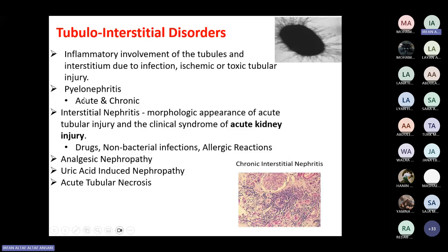This manifests in the form of either pyelonephritis — inflammation of the nephrons and the collecting system of urine — which can be acute or chronic. Another form is interstitial nephritis, whose clinical syndrome is known as acute kidney injury. Causes include drugs, sometimes non-bacterial infections, and allergic reactions such as mismatched blood transfusion or allergies to drugs.